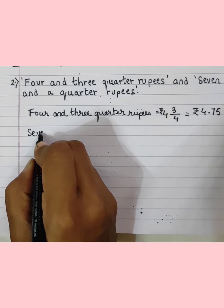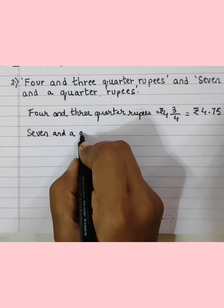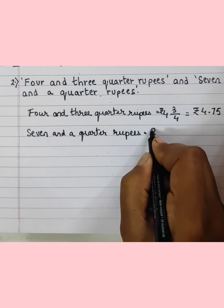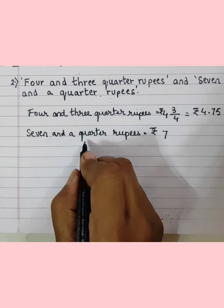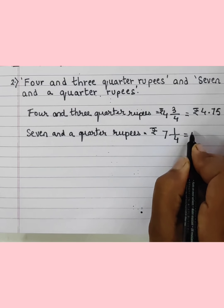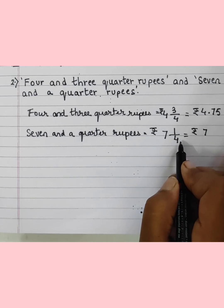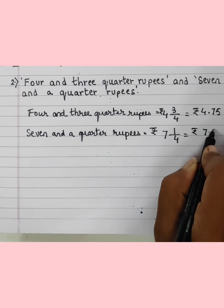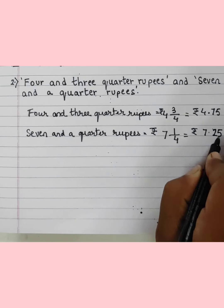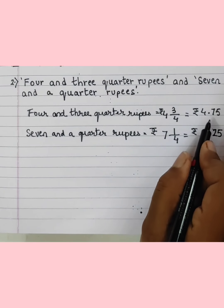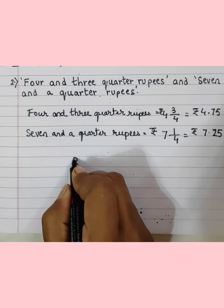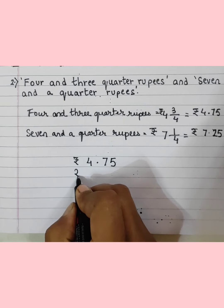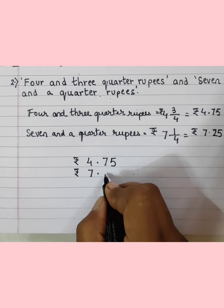The next value is 7 and a quarter rupees. Quarter means 1 upon 4, and 1 upon 4 equals 0.25. So we write 7.25 rupees. Now we add: rupees 4.75 plus rupees 7.25.